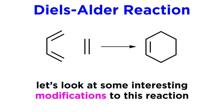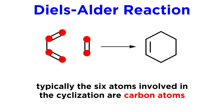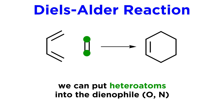As we recall, any Diels-Alder reaction involves a diene and a dienophile going to generate cyclohexene. Up until now, the six atoms participating in the cycloaddition have been carbon atoms, but interestingly, they do not need to be. We can utilize dienophiles in which one of the two atoms is not carbon, but is rather oxygen or nitrogen, and in doing so we can produce a variety of heterocycles.